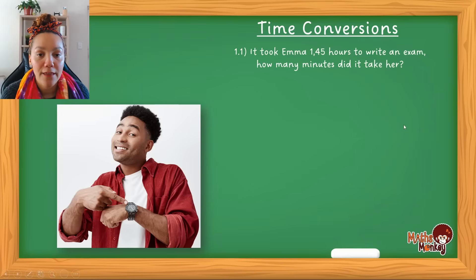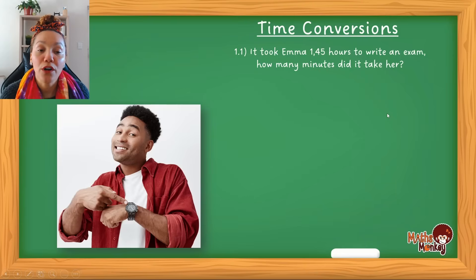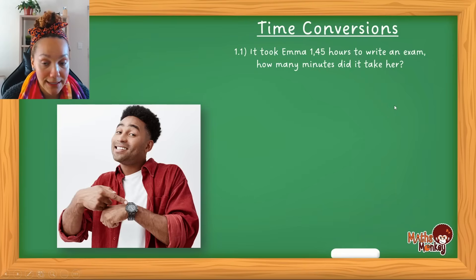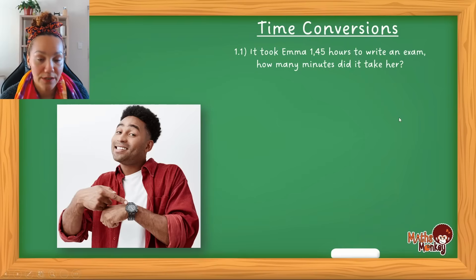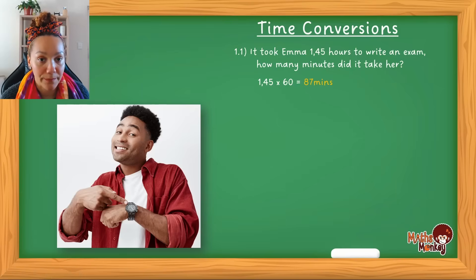The first question says it took Emma 1.45 hours to write an exam — how many minutes did it take? When converting hours to minutes you always multiply by 60, and if you're converting minutes to hours you divide by 60. So here you go 1.45 multiplied by 60, which gives you 87 minutes.